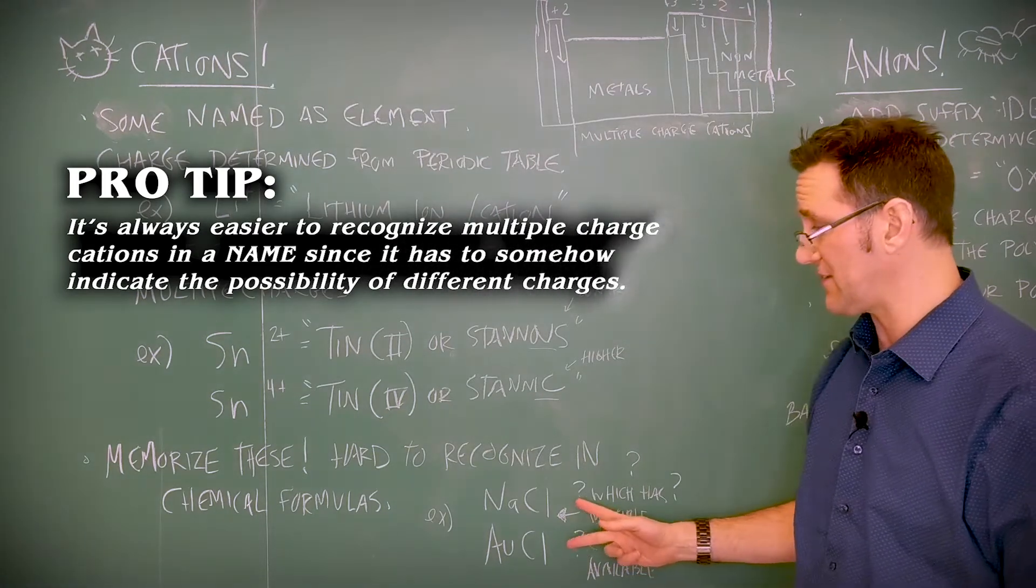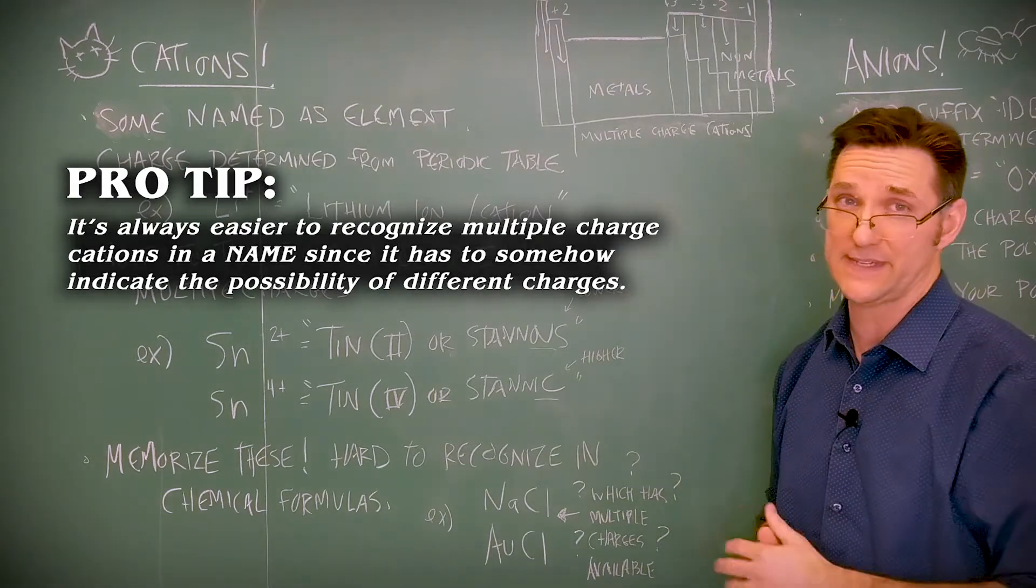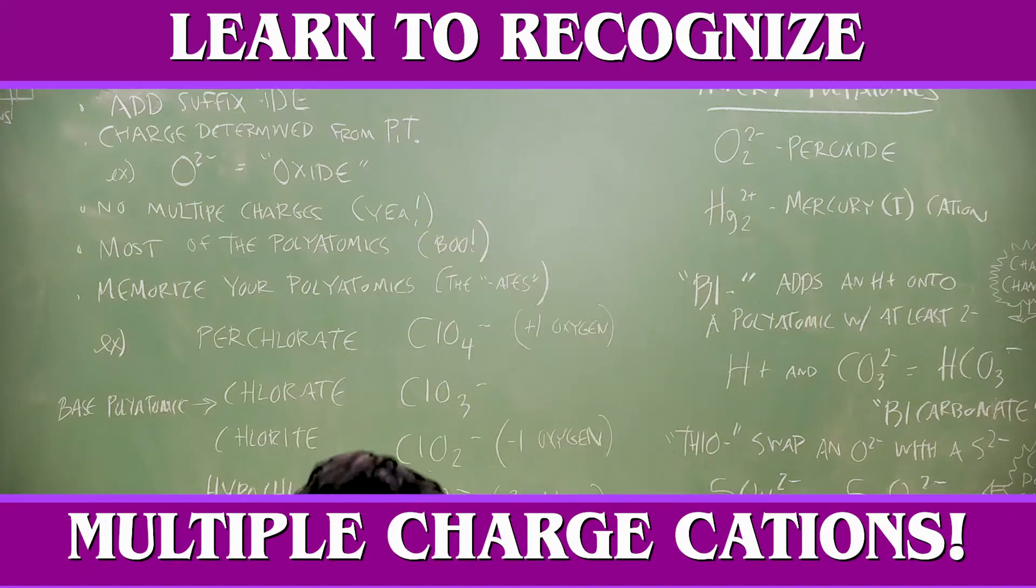You should at least be able to recognize your multiple charge cations. So for instance, take these two down here. Which one of these contains a multiple charge cation? Which one needs to be named differently? Do you know? I do. Just do it!